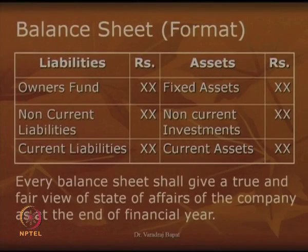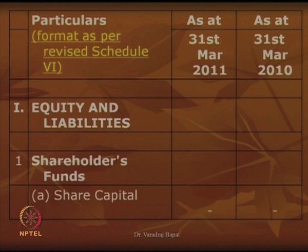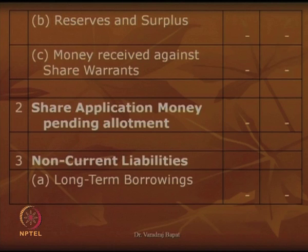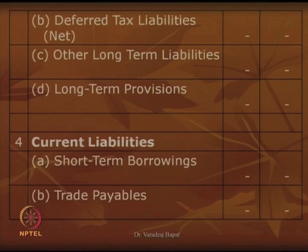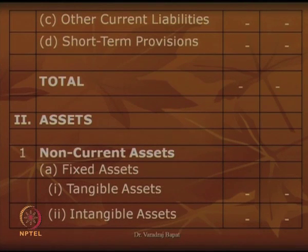Let us review the balance sheet again. On the liability side the first item was shareholder fund, second was share application money, third was non-current liability, and fourth was current liability — all liabilities are covered. Now let us go to the assets. Assets refer to the properties of the company — they are the resources used for business. Assets can be current or non-current, same as liabilities. Current assets are those which arise from the money cycle or day-to-day business and can typically be converted into cash within one year.